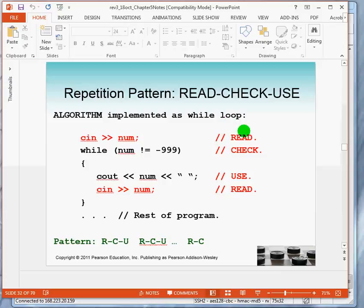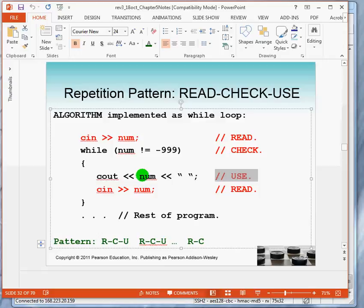If we implement this as a while loop, then we read a number. The while loop contains a test. And what are we doing? We're checking to see if this is input data. If the number is not minus 999, it is treated as an input value. In which case we do what? We use the value. In this case, we're outputting values. Then we must repeat the pattern.